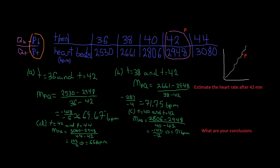Then we do the same thing with t equals 38 and t equals 42. We calculate the slope of the secant line: 2,661 minus 2,948 divided by 38 minus 42. That gives us negative 287 divided by negative 4, which equals 71.75 beats per minute.